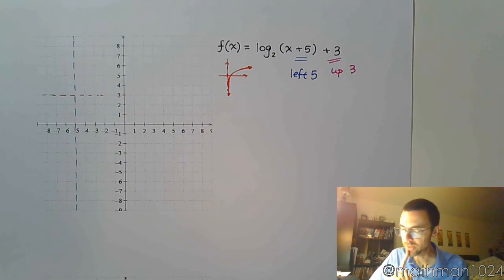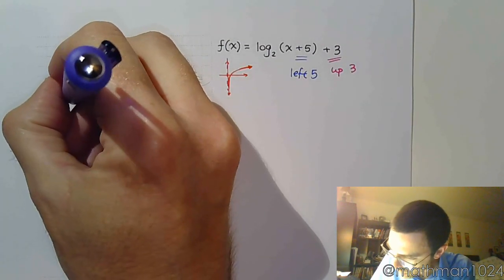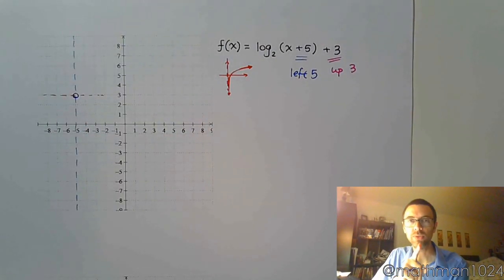Now we've got to be very careful about this. This is my new origin, but I don't actually have a point there. Remember, the key point for these guys will be (1, 0).